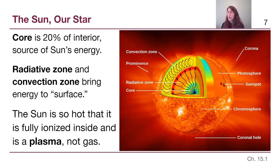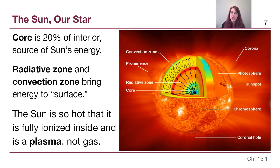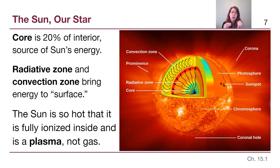The sun is so hot — over 10 million degrees Kelvin at the core — that everything inside it is not a gas but rather a plasma. You may know the three common states of matter — gas, liquid, and solid — from middle school or high school science. Plasma is an additional state of matter that acts very similar to a gas, but is so hot that all of the electrons are stripped away from the nuclei of atoms, meaning everything is ionized.